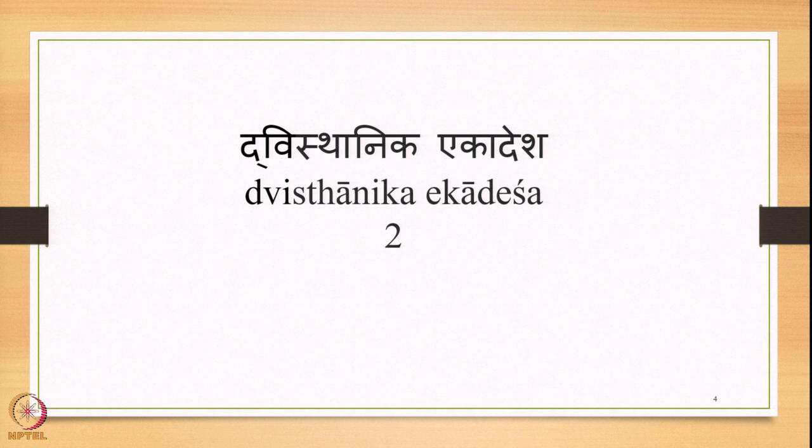Ekasthanika Ekadesha means one Sthani and one Aadesha — one substituent and one substitute. We studied that there are two instances of Ekasthanika Ekadesha: Yansandhi and Ayavayav Sandhi. Yansandhi is stated by the Sutra Ikoyanachi, and Ayavayav Sandhi is stated by Echoyavayavaha, along with some more Sutras also stating this particular Sandhi.